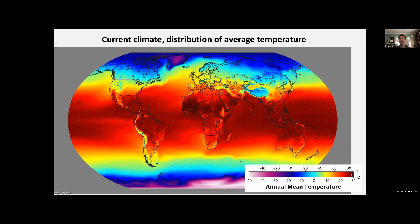Reds and browns are the warmest locations and blues are the coldest. Temperature is shown in both Fahrenheit and Celsius. The warmest temperatures are near the equator — India, Africa, the Amazon, Australia, and tropical oceans are all very warm. As you go north and south away from the equator it gets much colder. Mountains are also much colder than flat low-lying areas: the Rocky Mountains, Sierra Nevada, Andes, and Tibetan Plateau where the Himalayas and Mount Everest are located are all cold locations.